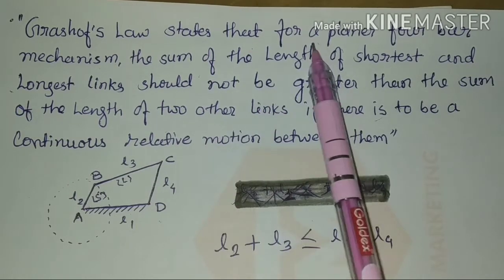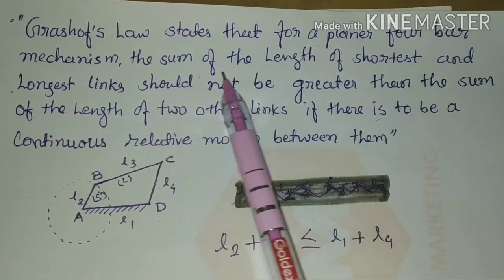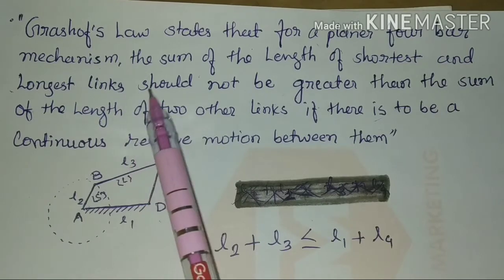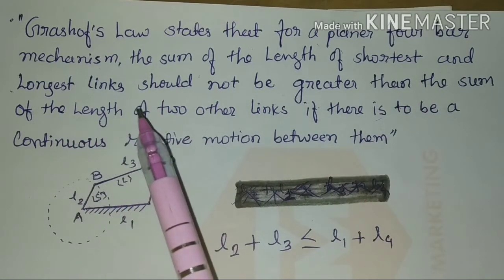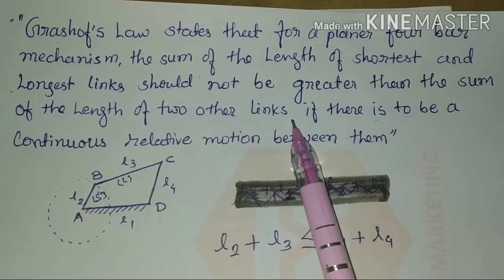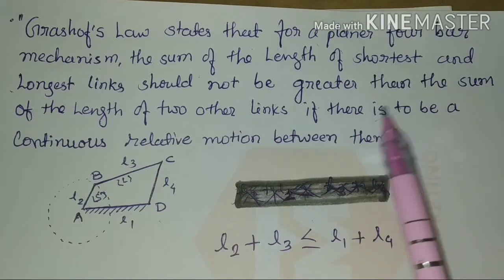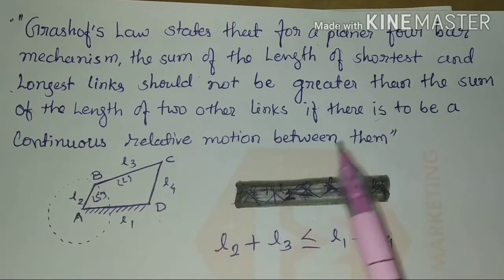Grashof's Law states that for a planar 4 bar mechanism, the sum of the length of shortest and longest link should not be greater than the sum of the length of two other links if there is to be a continuous relative motion between them.